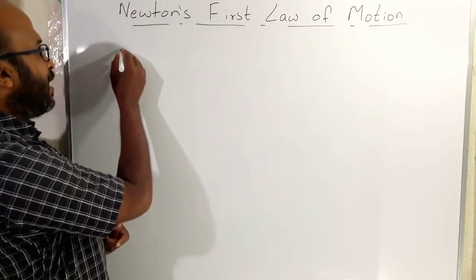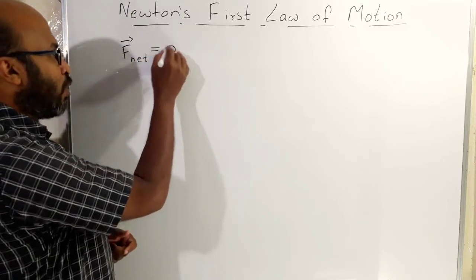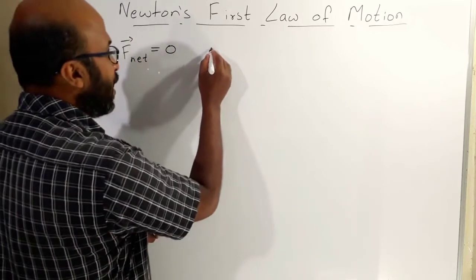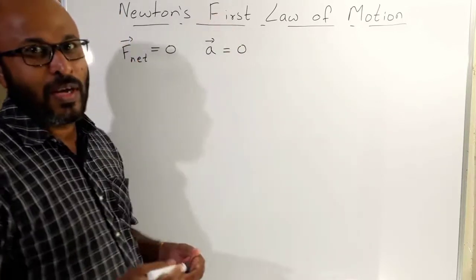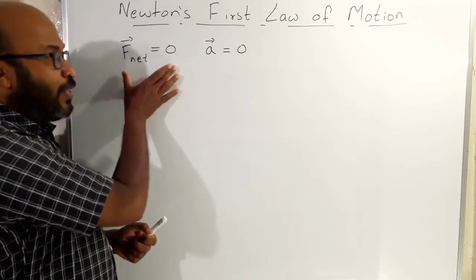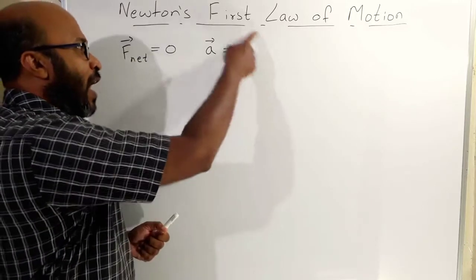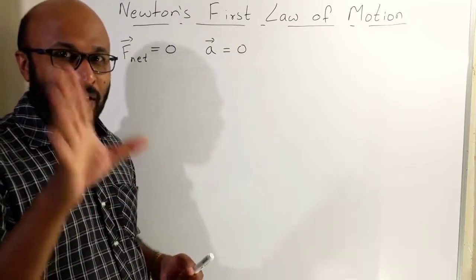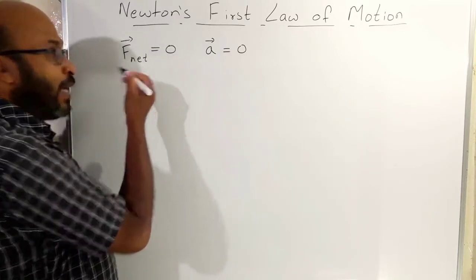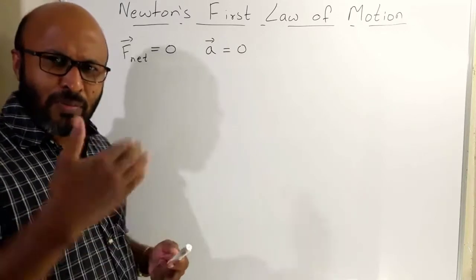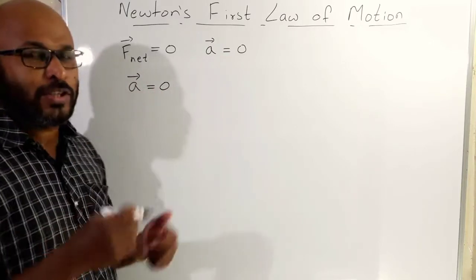It says that if the net force on a body is zero, it implies that the acceleration on that body is also zero. That is, if a body has zero external net force, then acceleration is zero.